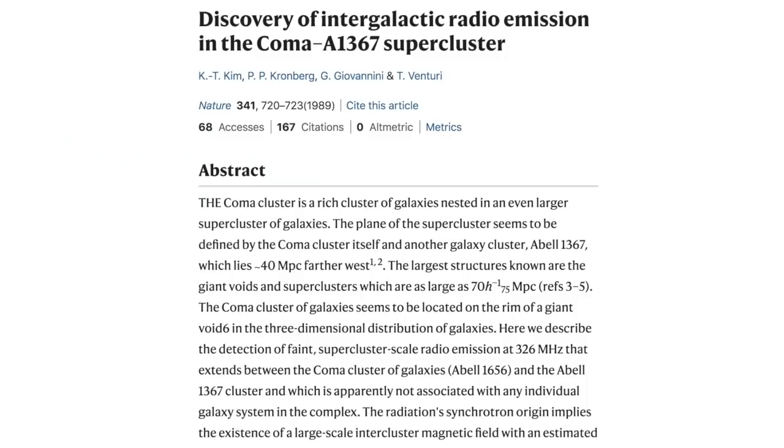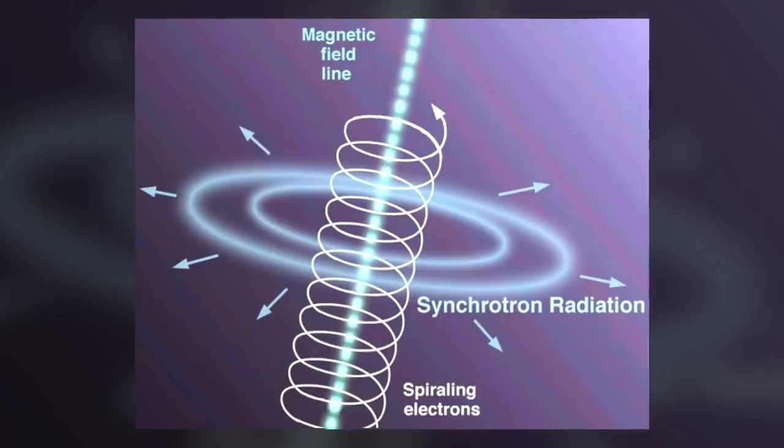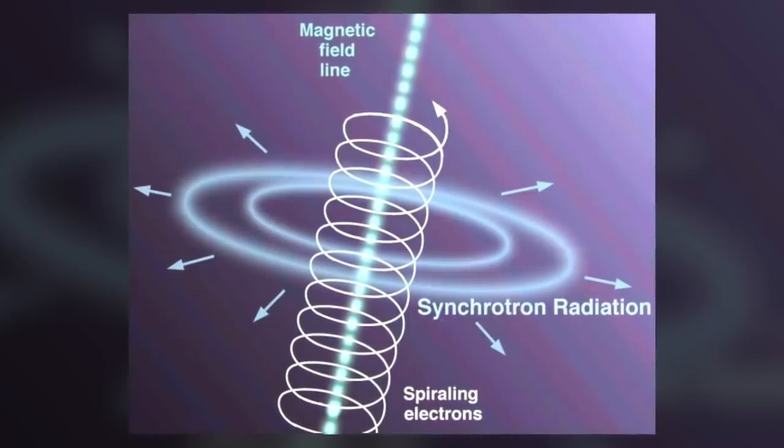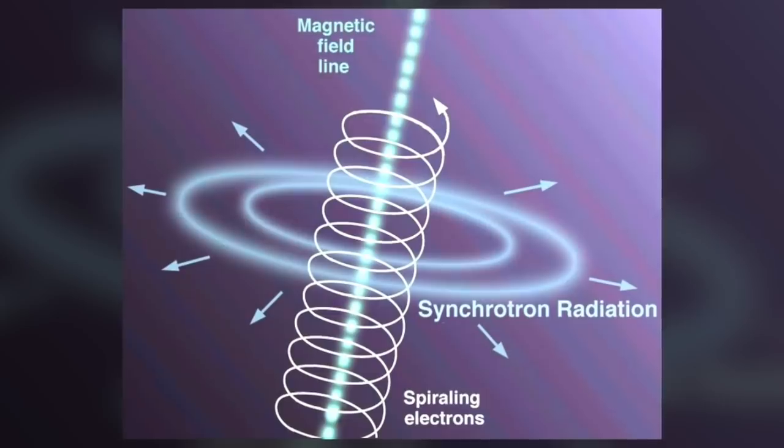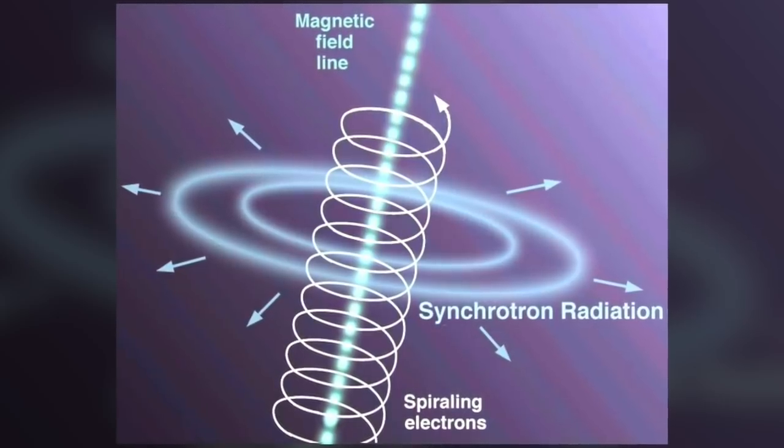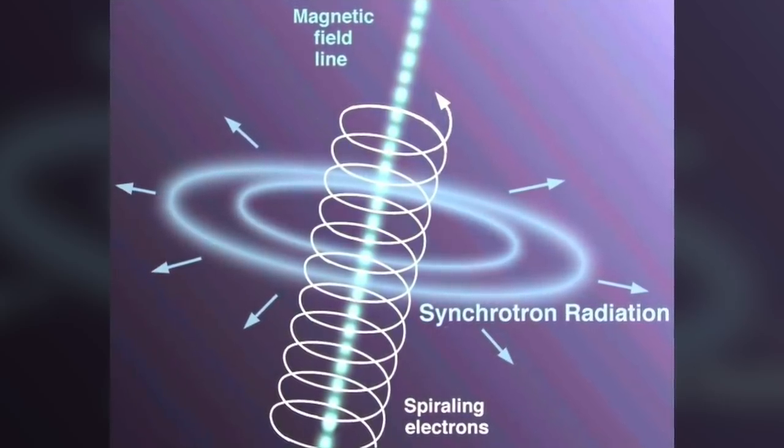In Peratt's view, these intergalactic currents are spiraling Birkeland currents, which will accelerate charged particles in circles, which is to say orthogonal to the current's direction, which must then generate synchrotron radiation.